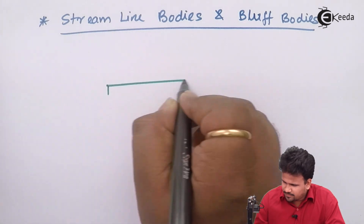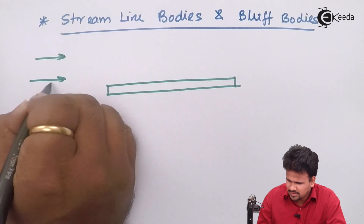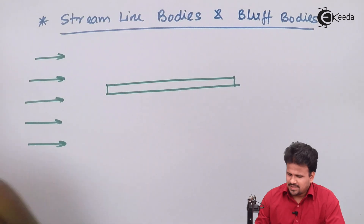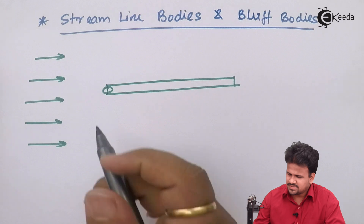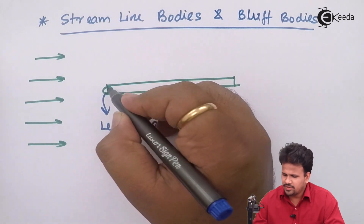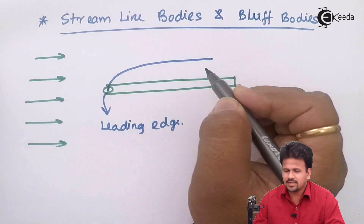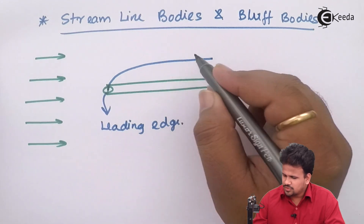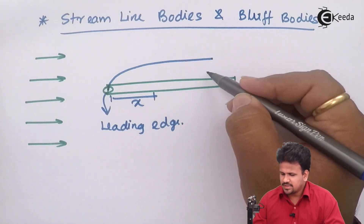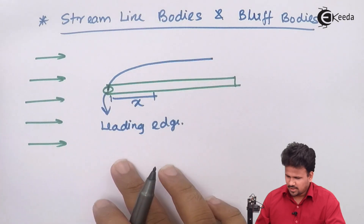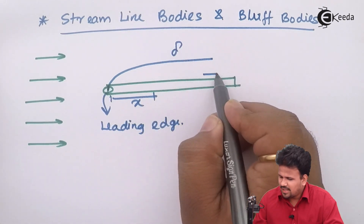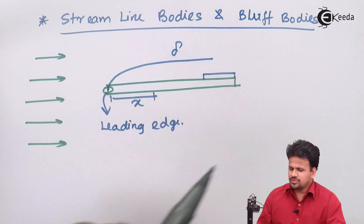Whenever a body is placed in a medium where air is flowing with certain velocity, there is a point which we define as the leading edge. From the leading edge, there will be a formation of a boundary layer, and as the boundary layer grows with respect to distance X from the leading edge, there is an increase in the growth of the boundary layer, as well as a laminar sub-layer formed due to the negative pressure gradient.